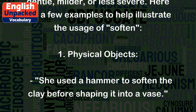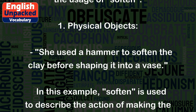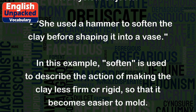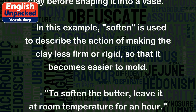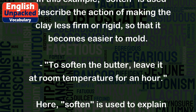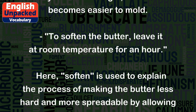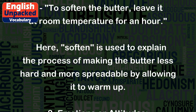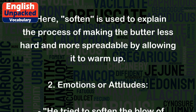One. Physical objects. She used a hammer to soften the clay before shaping it into a vase. In this example, 'soften' is used to describe the action of making the clay less firm or rigid, so that it becomes easier to mold. To soften the butter, leave it at room temperature for an hour. Here, 'soften' is used to explain the process of making the butter less hard and more spreadable by allowing it to warm up.